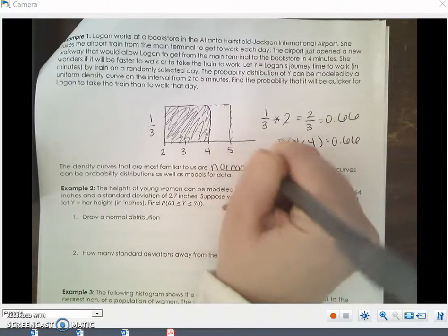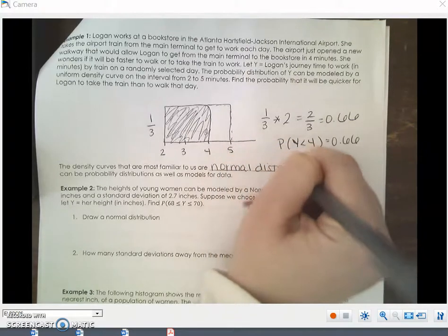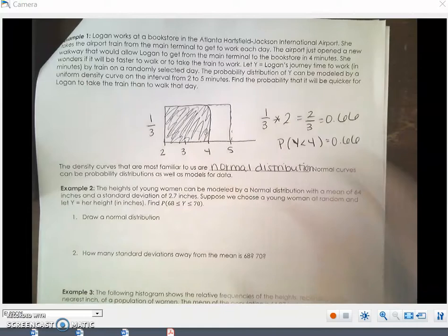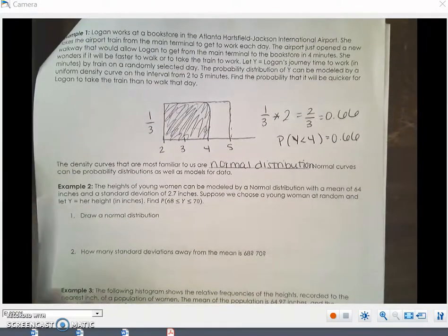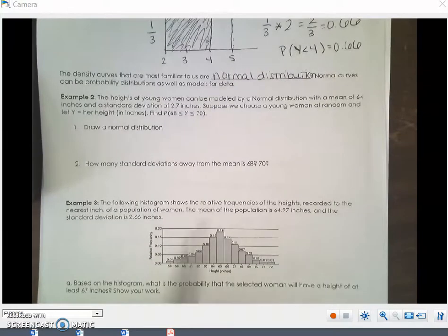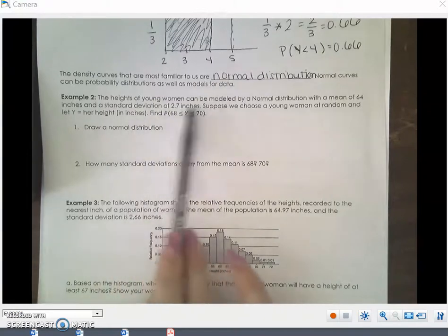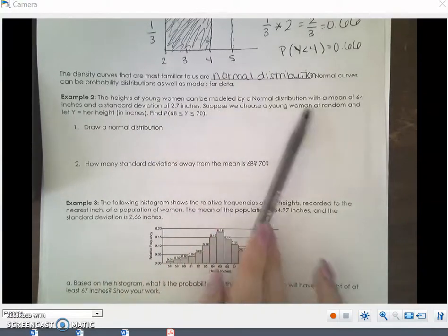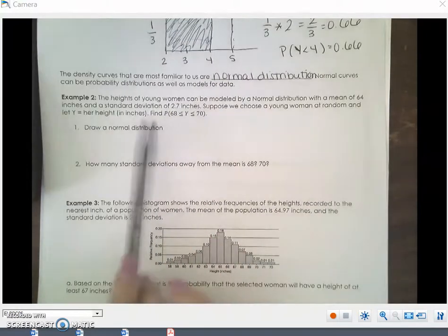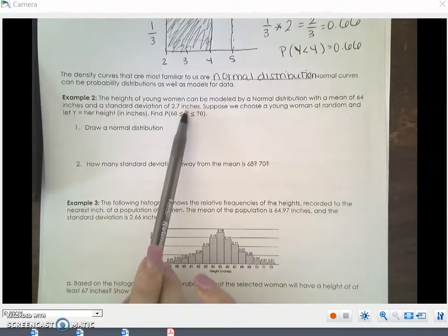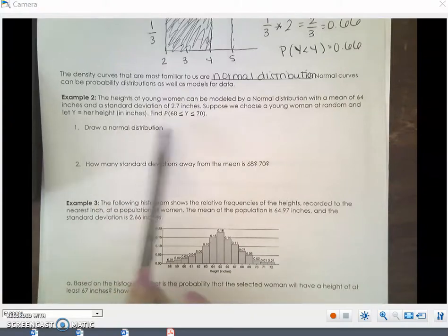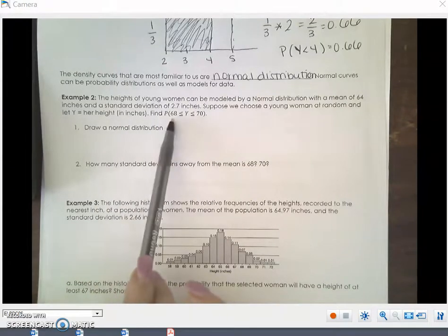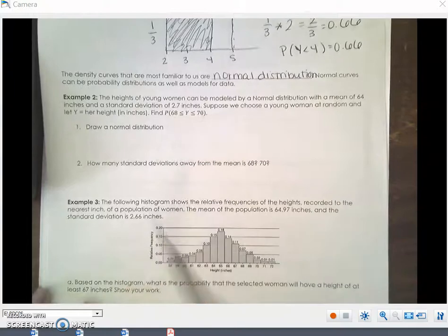The density curves that are most familiar to us are the normal distributions from chapter 4. We've talked about density curves before in the form of normal distributions, and we did that in chapter 2. Normal curves can be probability distributions as well for models of data. Example 2 says the heights of young women can be modeled as a normal distribution with a mean of 64 inches and a standard deviation of 2.7 inches. Suppose we chose a young woman at random and let Y equal her height in inches. Find the probability that it's between 68 and 70 inches.